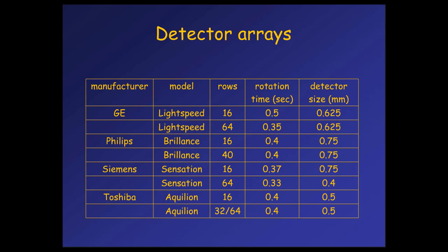Different vendors have different configurations of scanners. In modern scanners, you will have a number of rows that vary between 16 and 64. In the future, there's going to be more than 64. Rotation time of the gantry varies right now between one-third of a second and one-half of a second. The size of the detectors on the detector array vary from 0.4 mm to 0.75 mm. So sub-millimeter resolution in all scanners.